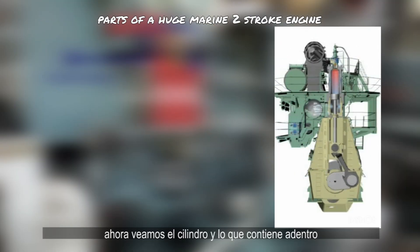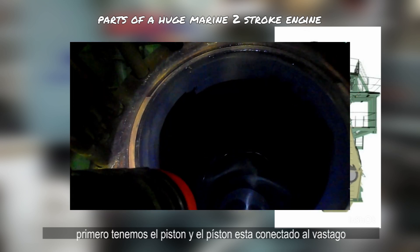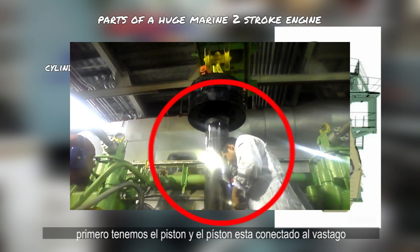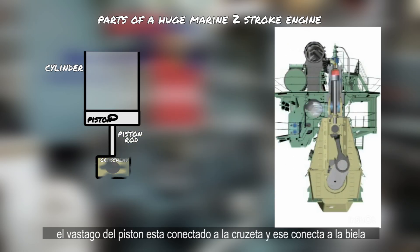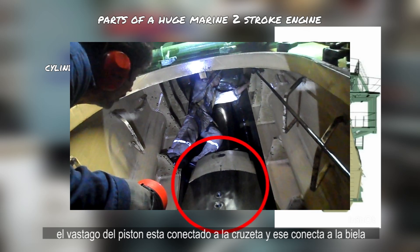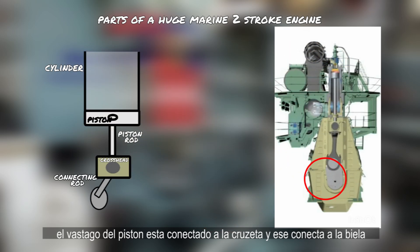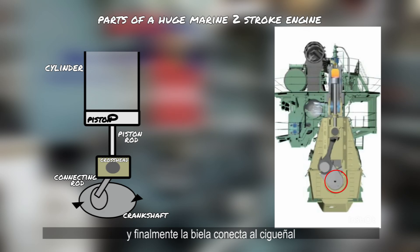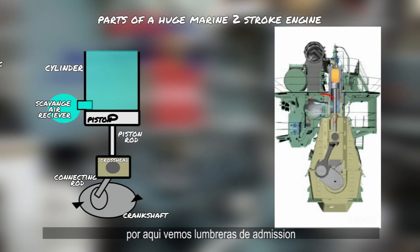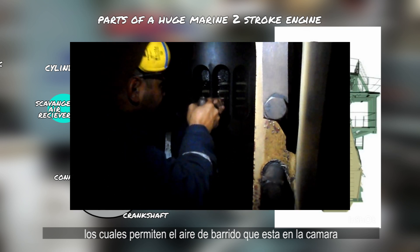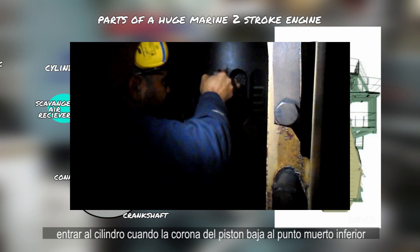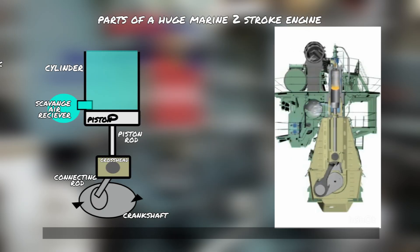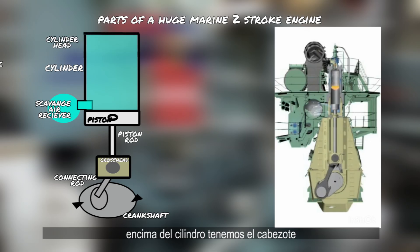Now let's look at the cylinder and what's inside it. Inside we have the piston, and the piston is connected to a piston rod. The piston rod is connected to a crosshead which connects to the connecting rod, and finally the connecting rod is coupled to the crankshaft. Here we can see admission ports that allow the scavenge charge air — which is in the receiver — inside the cylinder when the piston crown is below it.